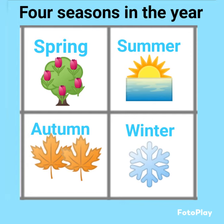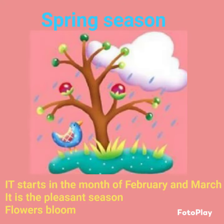4 Seasons: Spring, Summer, Autumn and Winter. Spring season starts in the month of February to March. It is a pleasant season. Flowers bloom.